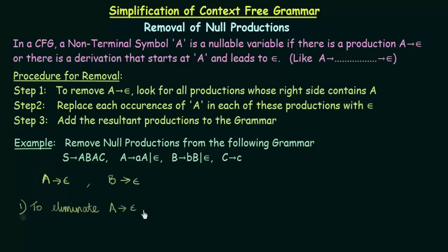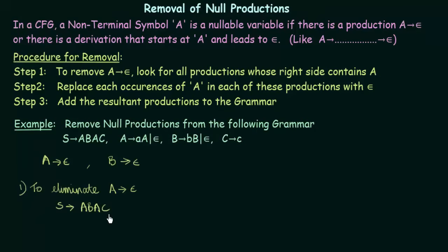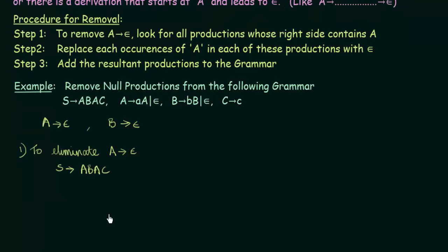To eliminate A gives epsilon, we look for all productions whose right side contains A. We see that in S we have A on the right side: S gives ABAC. We also have A in the production A gives AA, where A appears on the right side. In the other productions it is not there.